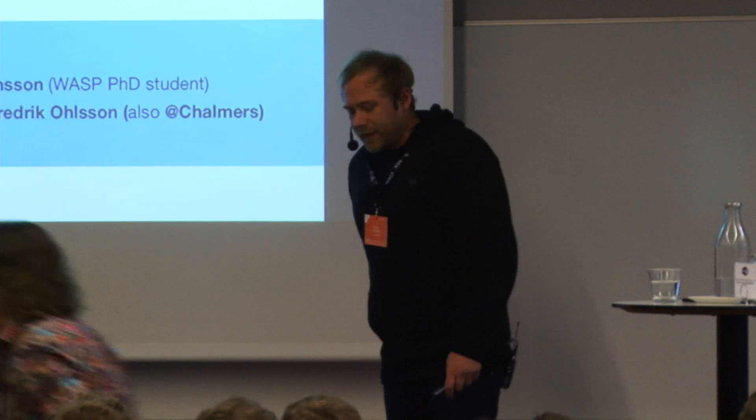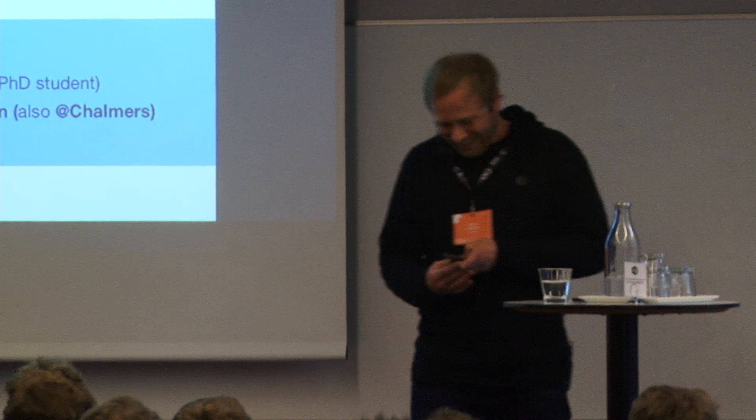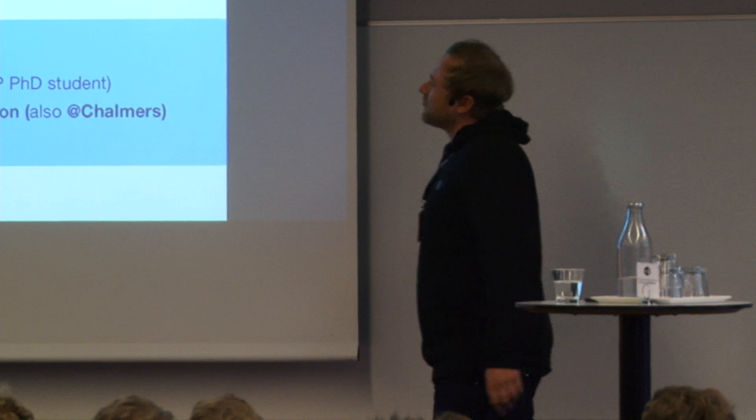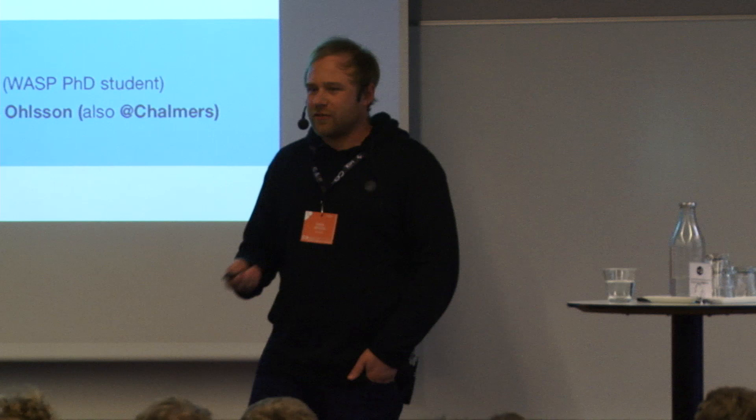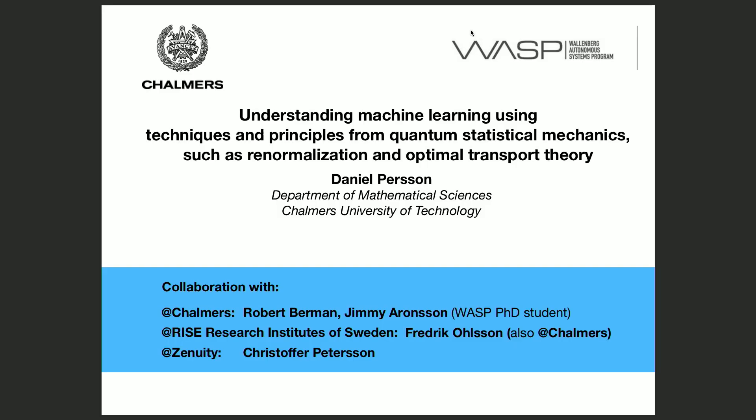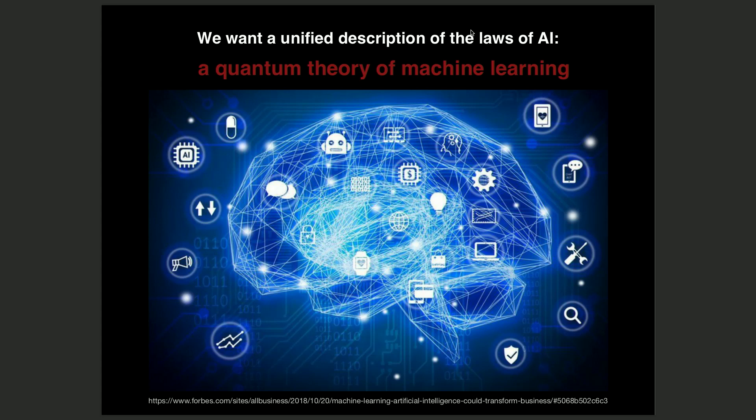When I gave this title to the organizers or to Joseph, he said oh, but you're just putting together fancy words and indeed that's what I'm doing. So I have sort of a longer title, but I won't have time to say anything about this anyway. I have a background in theoretical physics and mathematics. So I guess at the moment I would classify myself as a mathematical physicist or a physical mathematician. Usually when I give talks I show this slide. I've been working on understanding sort of unifying the laws of nature and in particular trying to understand what a quantum theory of gravity is. For this conference, I just took the same slide and I just switched the picture and I said we want to have a unified description of the laws of AI. So we are looking for a quantum theory of machine learning.